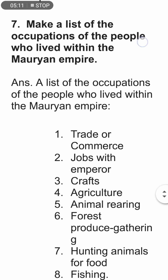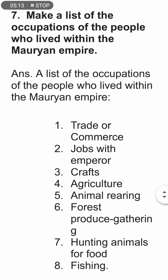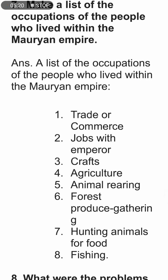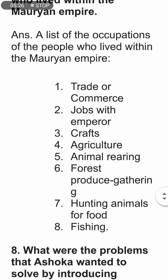Make a list of the occupations of the people who lived within the Maurya Empire. These included trade or commerce, officials with salaries working for the emperor, crafts, agriculture (the most important), animal rearing, forest produce gathering, hunting animals for food, and fishing.